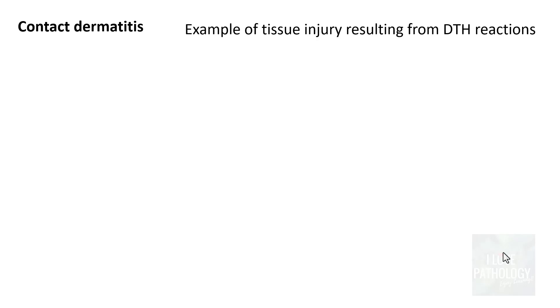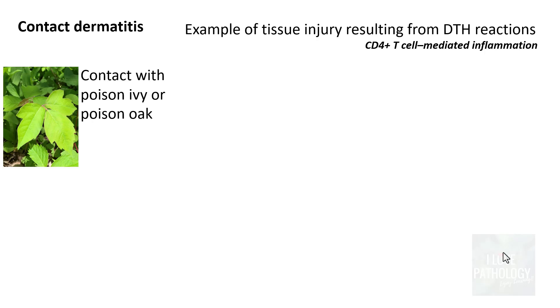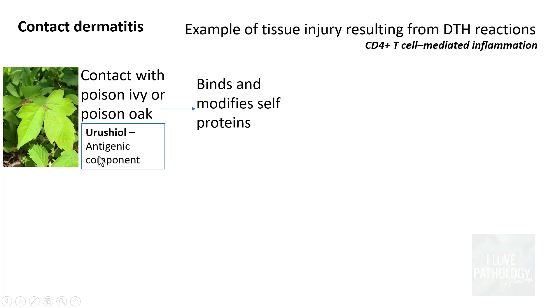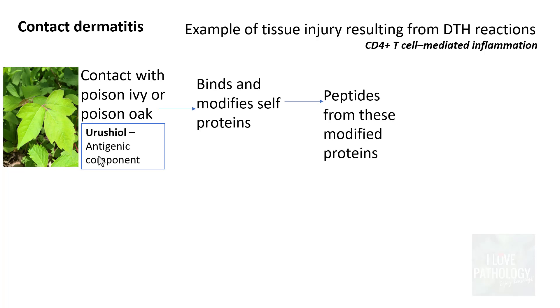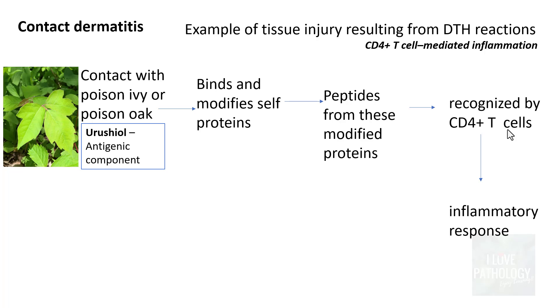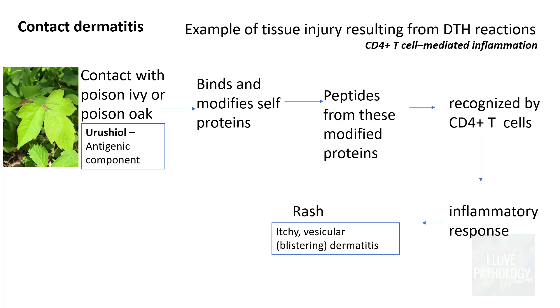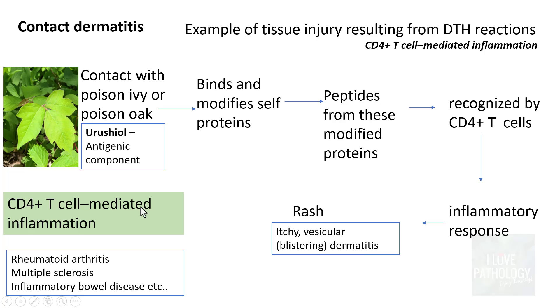The second example is contact dermatitis, tissue injury from delayed type hypersensitivity — a CD4 positive T cell mediated inflammation. For example, contact with poison ivy or poison oak: these leaves contain urushiol, an antigenic component that binds and modifies cell proteins. Peptides released from these modified proteins are recognized by CD4 positive T cells, inducing an inflammatory response clinically manifested by itchy rashes and blister formation — referred to as blistering or vesicular dermatitis. Other examples include rheumatoid arthritis, multiple sclerosis, and inflammatory bowel disease.